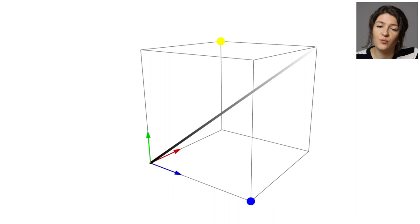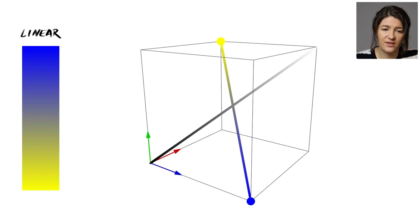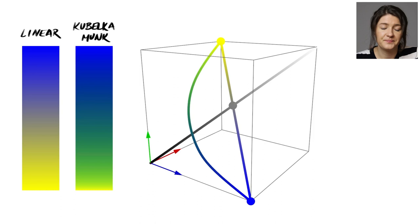Now let's have a look at the difference between Kubelka-Munk and linear additive mixing. Mixing blue and yellow by doing a linear combination of them, like it's done in Photoshop, creates a straight line that pierces through the grayscale diagonal in the middle. But subsurface scattering is a highly non-linear process, and so is the Kubelka-Munk formula. And thanks to this non-linearity, the trajectory between blue and yellow bends away from the grayscale and it passes through this beautiful green. So this is what happens in real life, and this is what we want in digital painting.